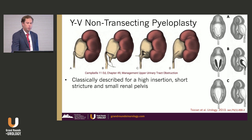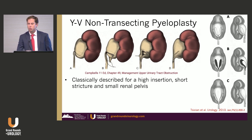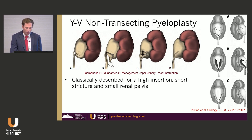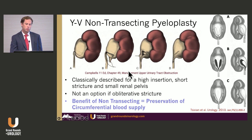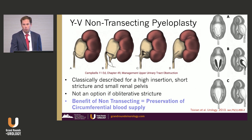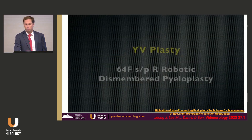The YV Foley non-transecting pyeloplasty is classically described for high insertion of a ureter, short stricture, and small renal pelvis, although it's been shown you can also do this with a much more dilated renal pelvis with a concurrent reduction pyeloplasty. This is not an option for an obliterative stricture — you're making a long longitudinal ureterotomy and you want to have healthy tissue there. The benefit of all non-transecting techniques, borrowed from lower tract surgeons, is theoretically preservation of the circumferential blood supply.